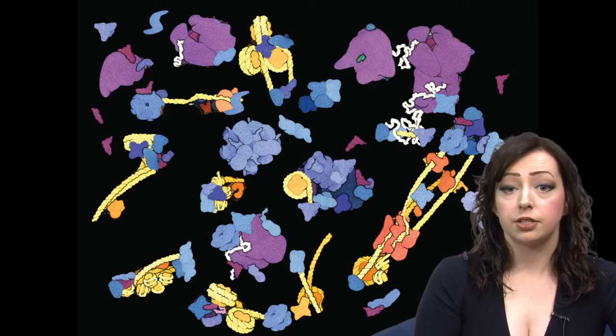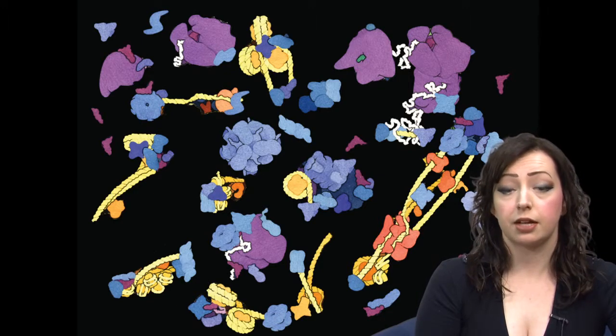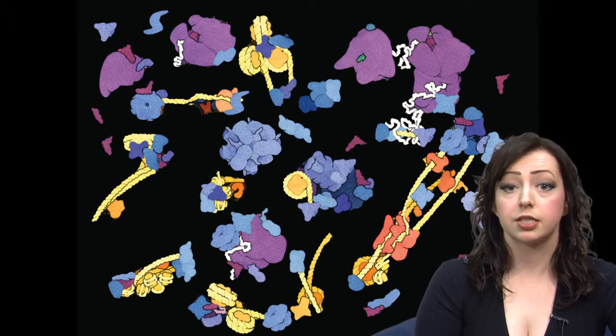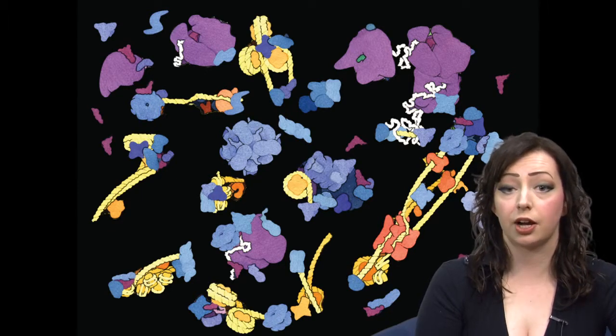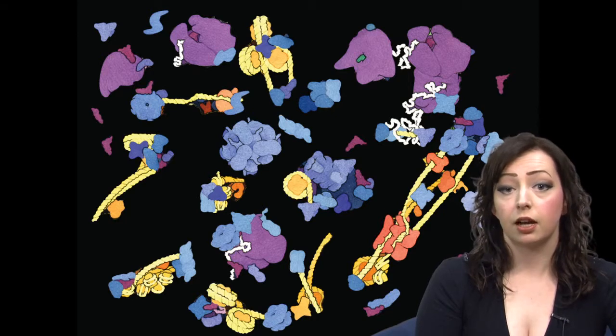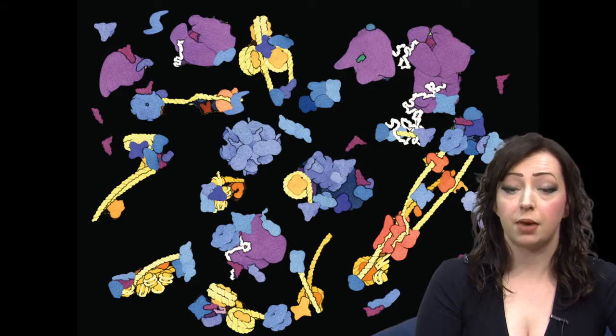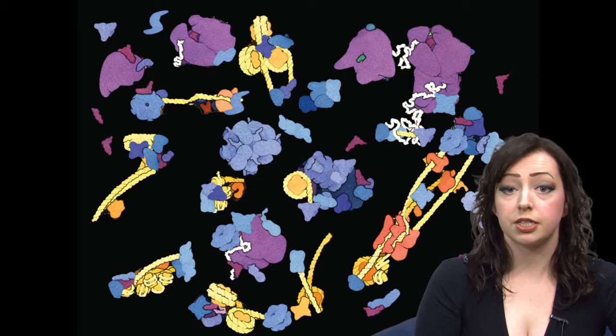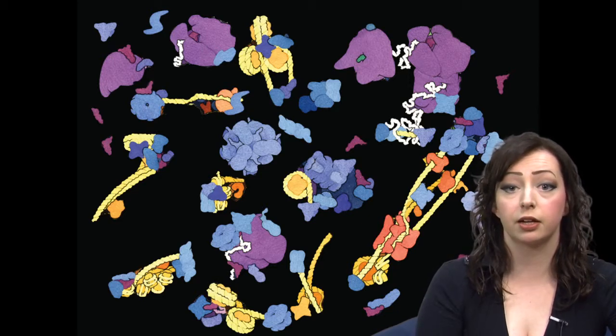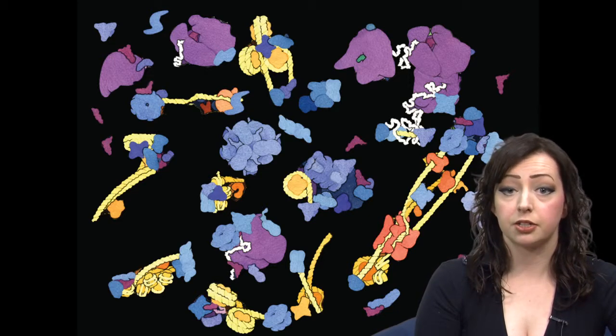And the cell debris is removed by centrifugation, and the resulting soluble portion is the cell extract. Obviously, lysis disrupts cell walls and membranes, but it also shears DNA and disrupts the extensive macromolecular networks that wire the cytoplasm.